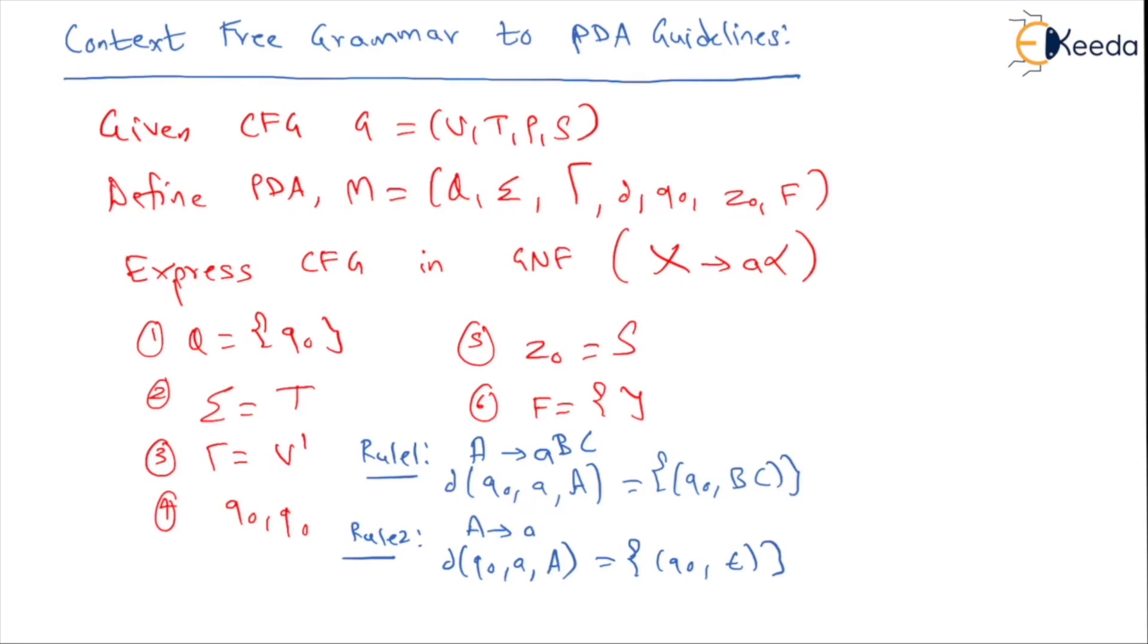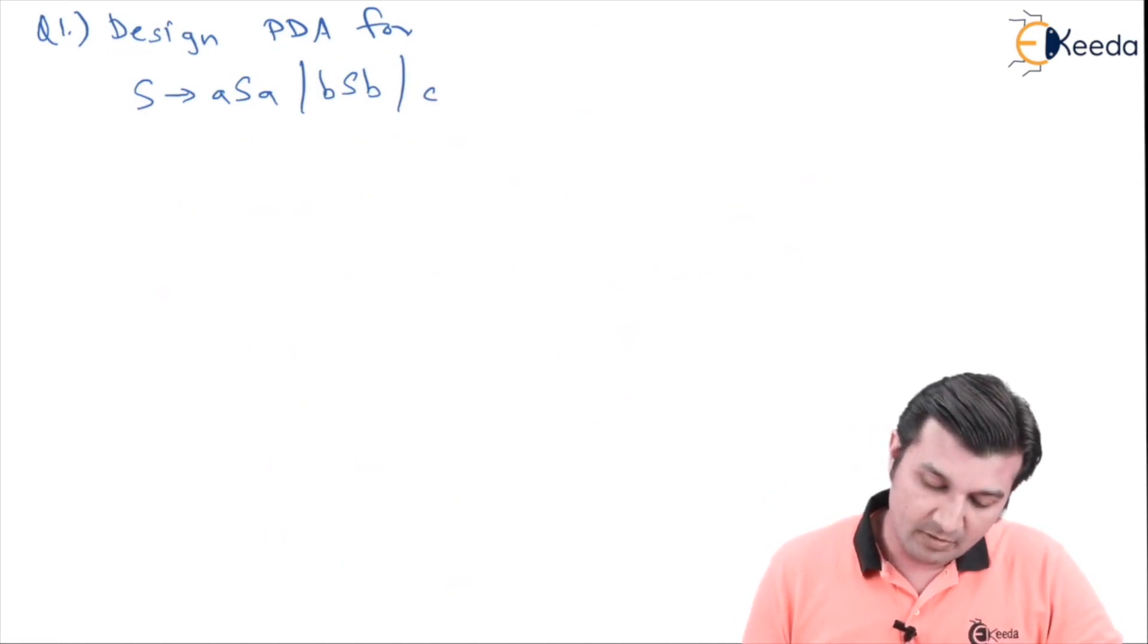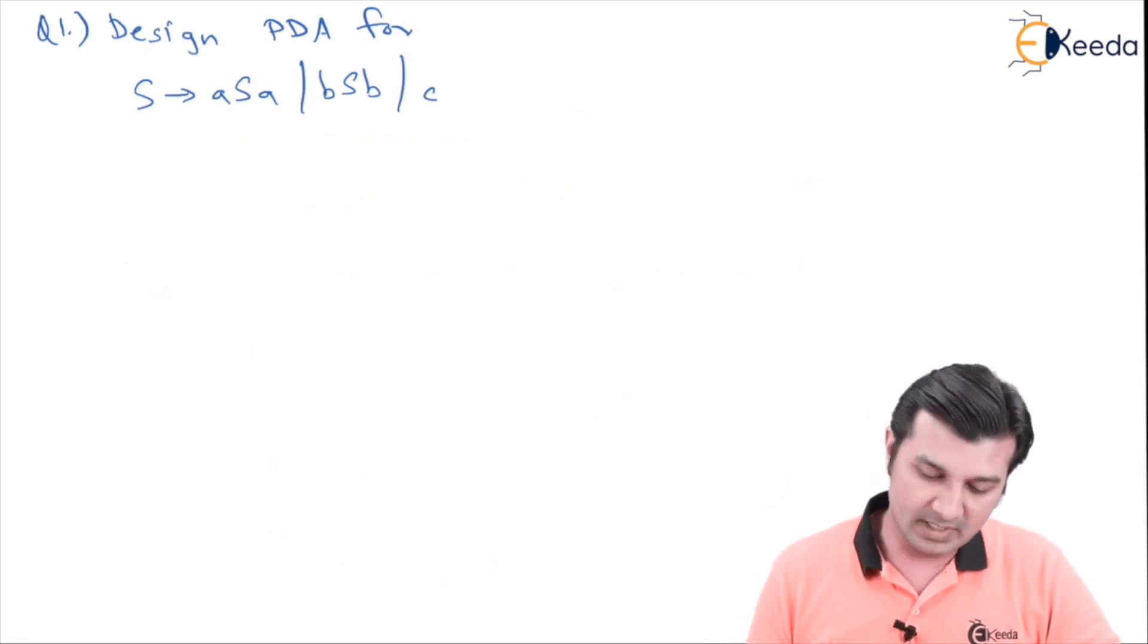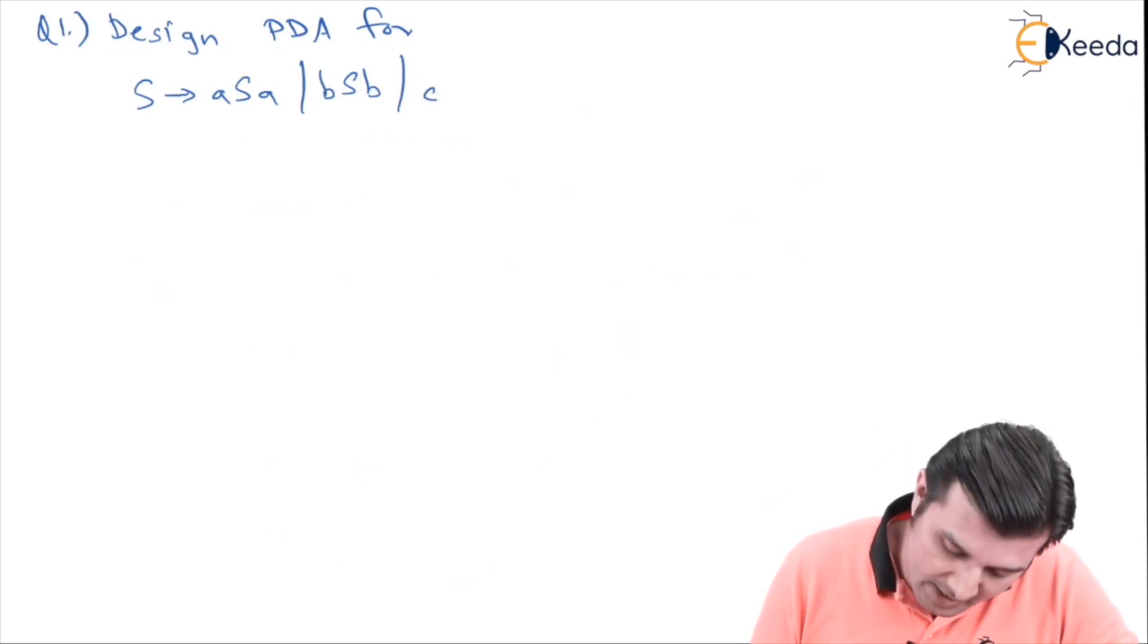So now let's start with the problem and try to get a deeper understanding of the same. So friends, the problem which is given to us says design a pushdown automata for the following. So now before we start deciding how to do a pushdown automata for it, let us write a couple of important things that we just discussed in the definition. First thing is we have to get it converted to GNF.